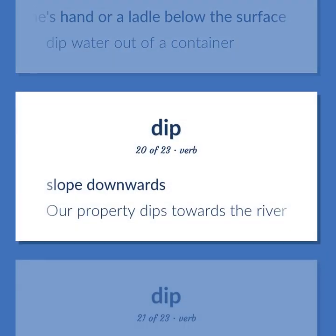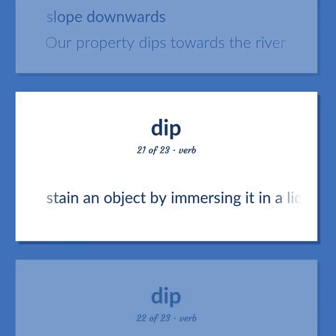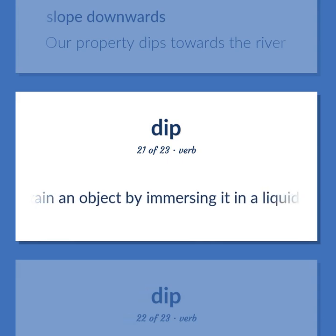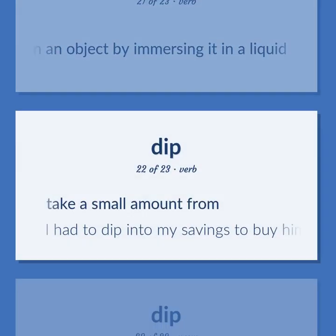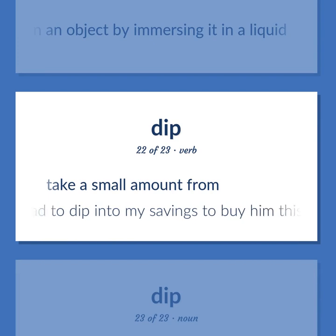Slope downwards. Our property dips towards the river. Stain an object by immersing it in a liquid. Take a small amount from. I had to dip into my savings to buy him this present.